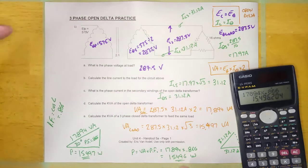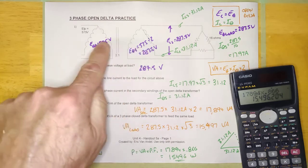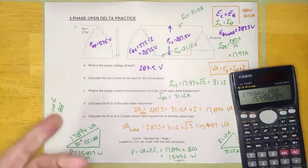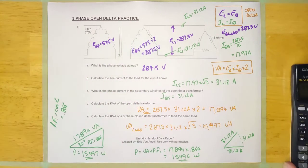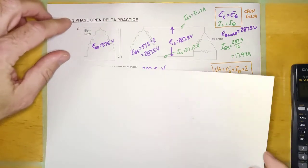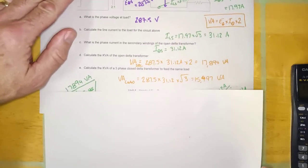Okay guys, now at this point somebody will say to me, listen, why do we even bother with open delta? Well, let's think about it for a second here. I'm going to get a piece of scrap paper here. Let's see if we can use the back of this one here for a second.